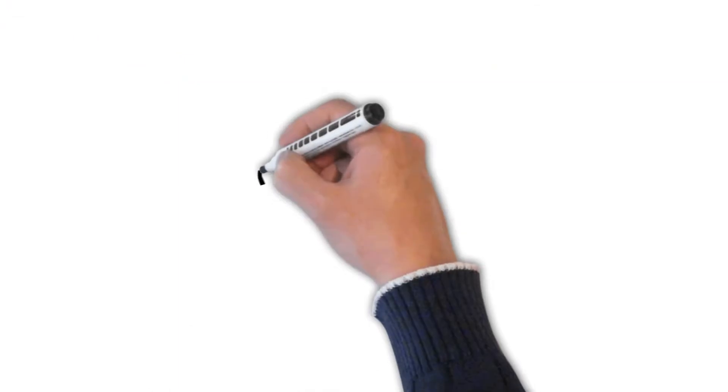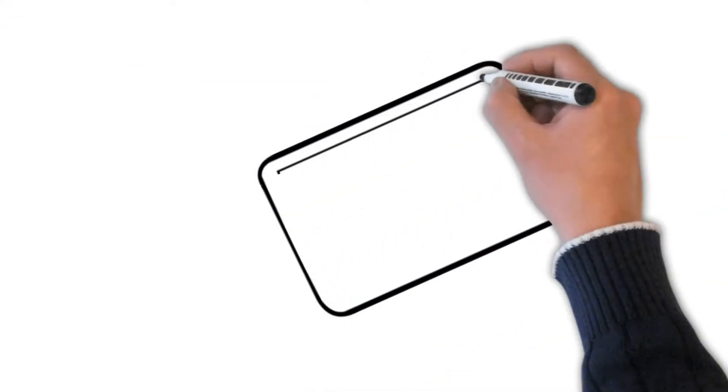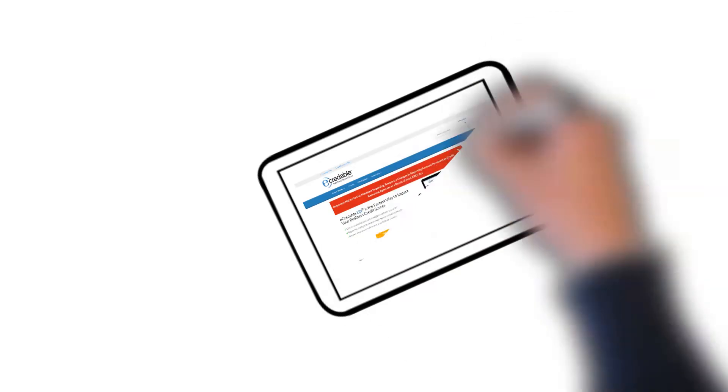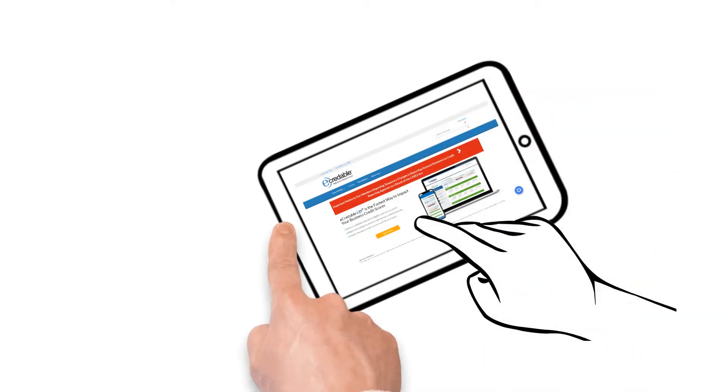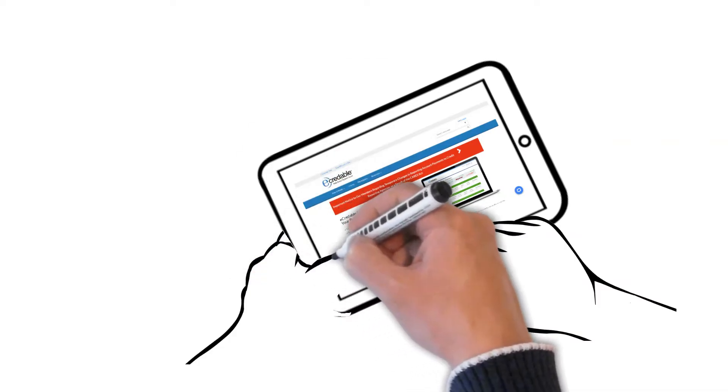eCredible has a one-time setup fee of $49.95 and then a monthly subscription fee of $9.95 per month to continue reporting your business utilities and telecommunications payments to the business credit bureaus.